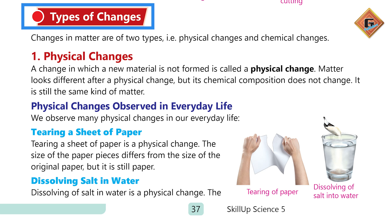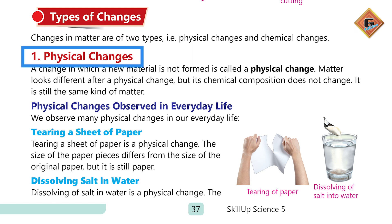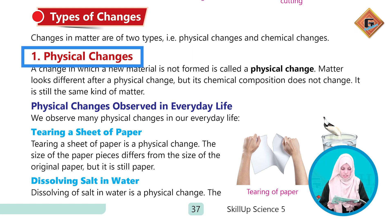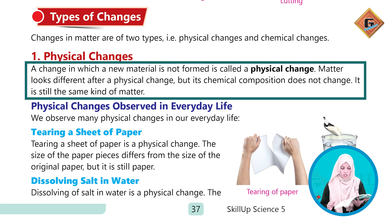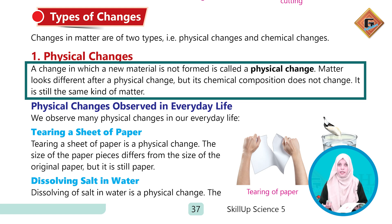اس کے بعد types of changes — کس طرح کی changes کی types ہوتی ہیں۔ First ہے ہمارے پاس physical changes اور second ہے chemical changes۔ Physical changes میں: a change in which a new material is not formed is called physical change. اگر ہم کسی matter میں changes کرتے ہیں تو اس کی physical properties میں change آتی ہے نہ کہ کوئی new material بنتا ہے — اس چیز کو ہم physical change کہتے ہیں۔